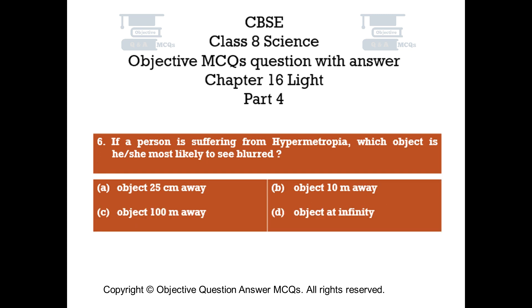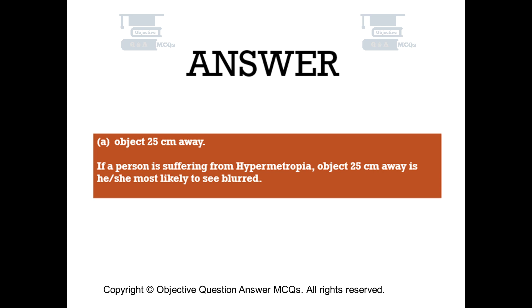Question number 6. If a person is suffering from hypermetropia, which object is he or she most likely to see blurred? Option A object 25 centimeters away. Option B object 10m away. Option C object 100m away. Option D object at infinity. The right answer is option A: object 25 centimeters away is most likely to be seen blurred by a person suffering from hypermetropia.